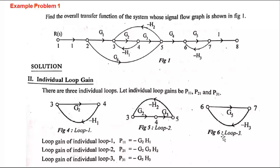The individual loop gains are: loop gain P1,1 = −G2·H1; loop gain P2,1 = −G2·G3·H2; and loop gain P3,1 = −G5·H3. In the third step, identify the two non-touching loops. Loop 1 has nodes 3 and 4. Loop 2 has nodes 3, 4, and 5 — these two share common node 3, so they are touching loops. Loop 1 compared with Loop 3: nodes 3,4 versus nodes 6,7 — no common node, so these are non-touching. Loop 2 compared with Loop 3: nodes 3,4,5 versus nodes 6,7 — no common node, so these are also non-touching.